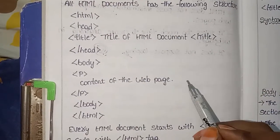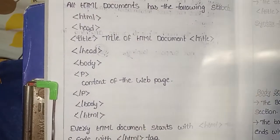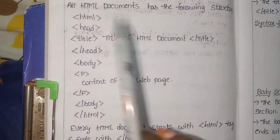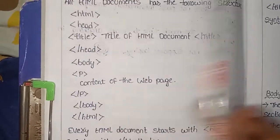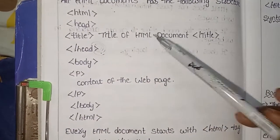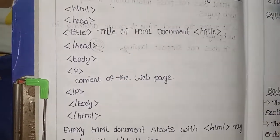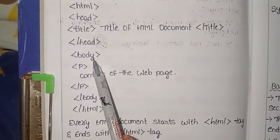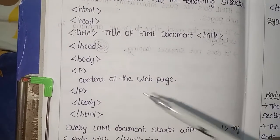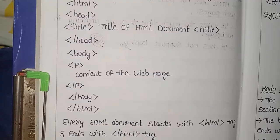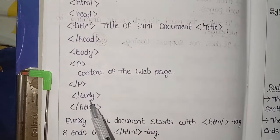There are two sections in HTML. The first section is the head section. The second section is the body section. The head section contains the title section. The body section contains paragraphs, images, videos, and audios. This is the body tag.